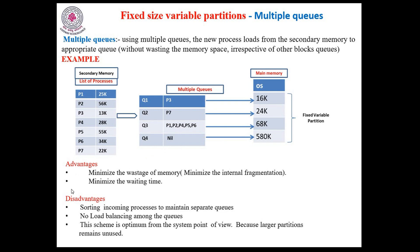The advantages of multiple queues: minimize the wastage of memory and minimize internal fragmentation. If I follow multiple queues, I am able to minimize internal fragmentation. In the previous method, for a smaller job, if P3 required 13K and I allocate a larger partition, memory is wasted — we are trying to minimize this with multiple queues. By making a queue system with respect to partition size, we minimize wastage of memory and also minimize waiting time.